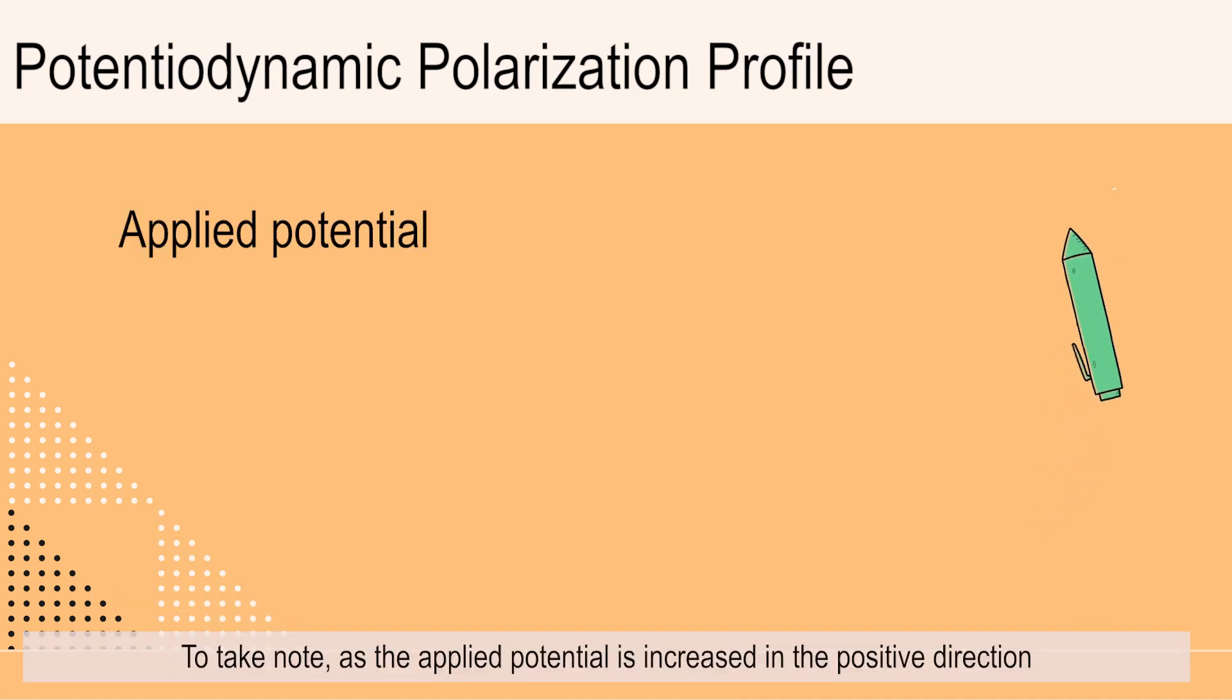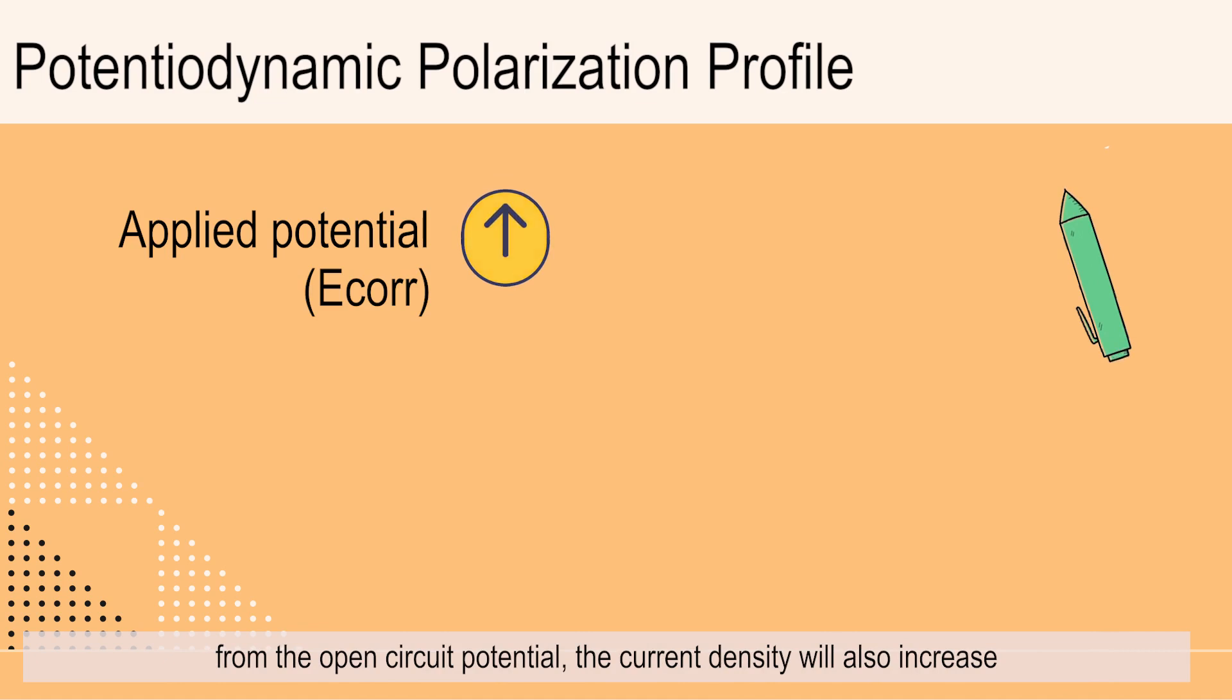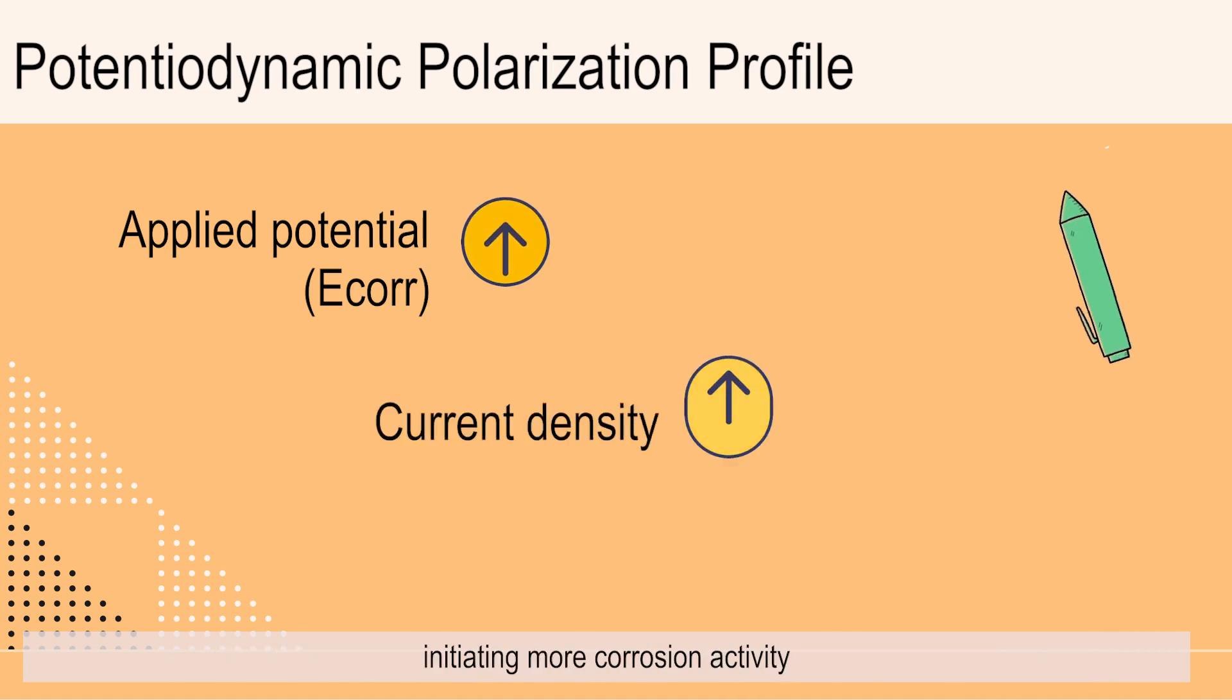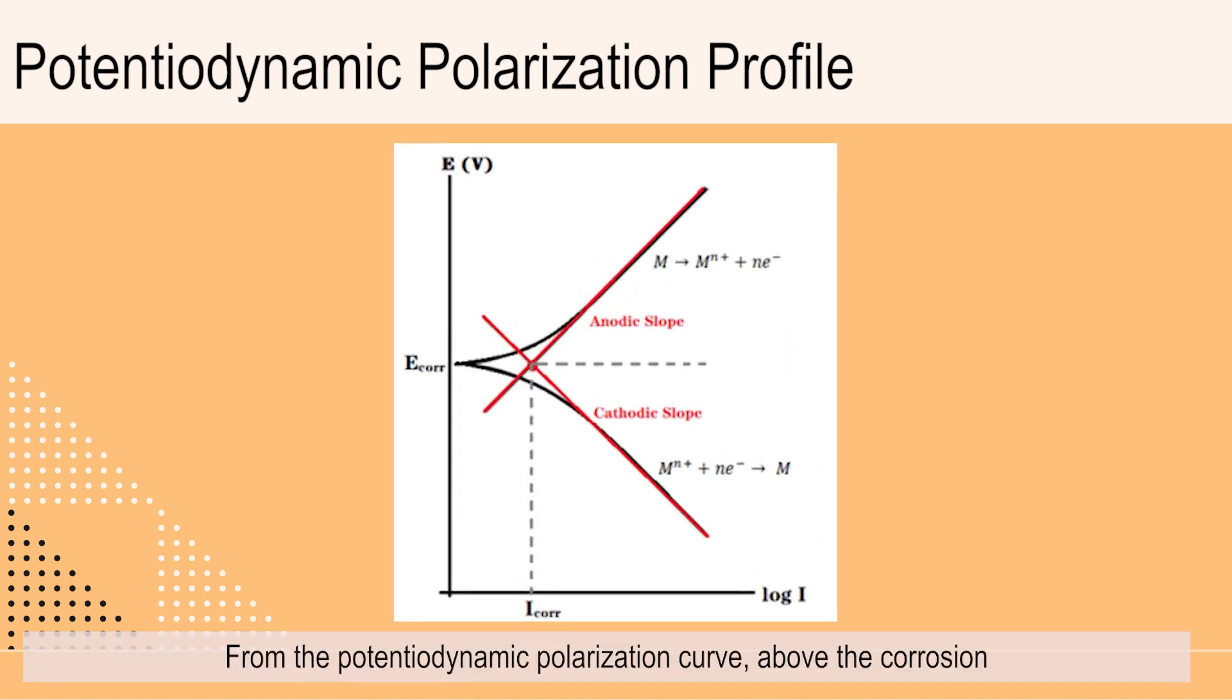To take note, as the applied potential is increased in positive direction from the open circuit potential, the current density will also increase, initiating more corrosion activity. From the potentiodynamic polarization curve, above the corrosion potential is anodic slope, while below it is cathodic slope.